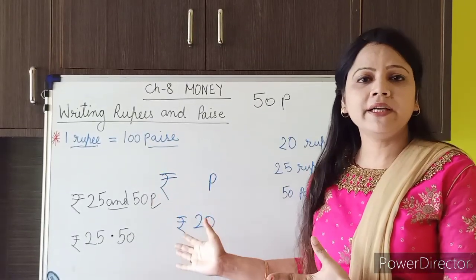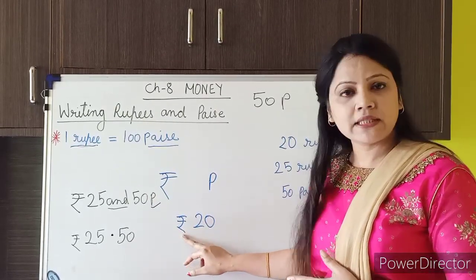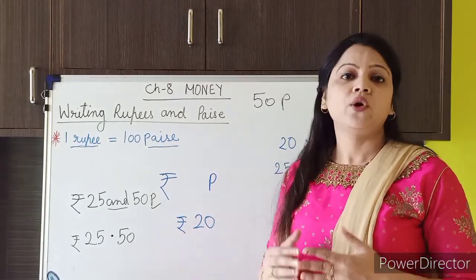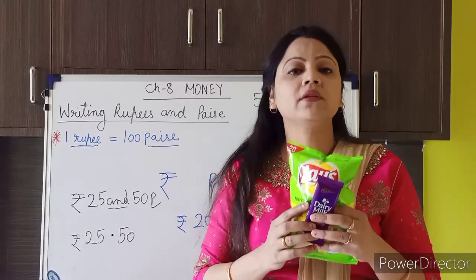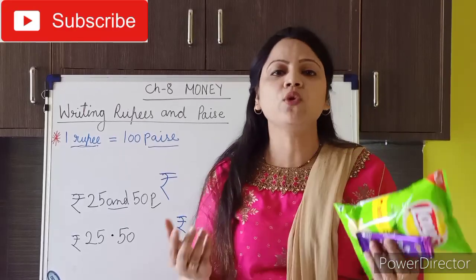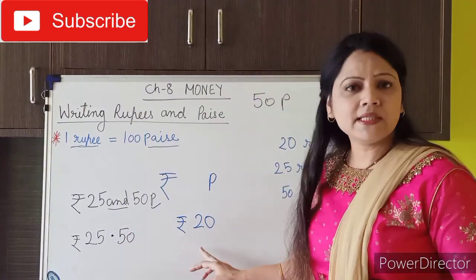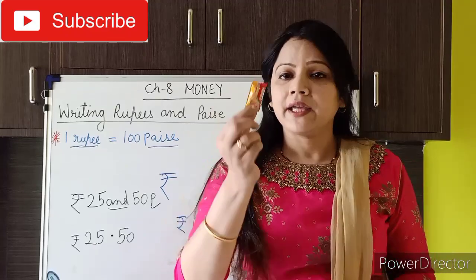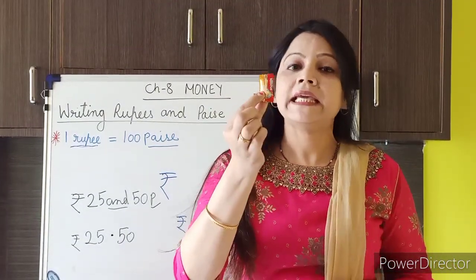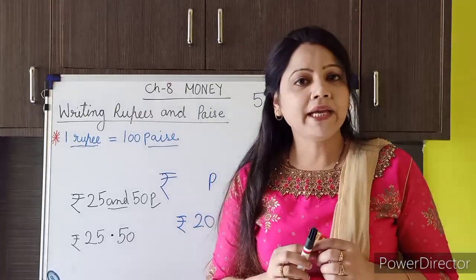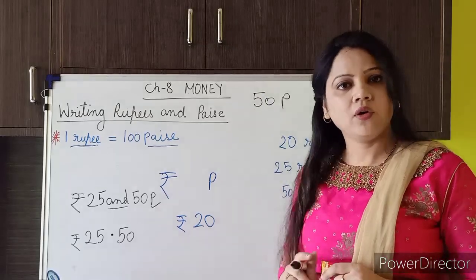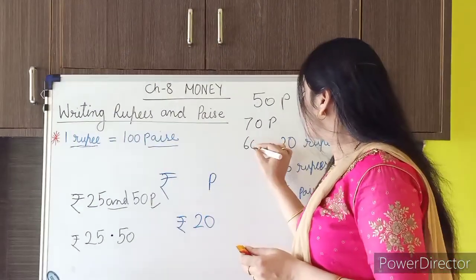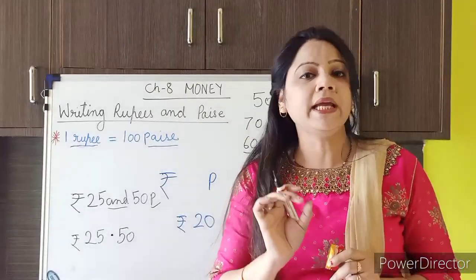So what have you learned here? To write only rupees, we use the rupee symbol and write the amount — like rupees 20, rupees 50, rupees 100, rupees 1000. But if we have to write only paise, like the cost of a toffee is 50 paise, we write only 50P. Similarly, 70 paise is written as 70P, 60 paise as 60P — we write the number and then only P.